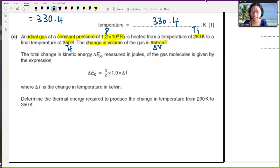So the total change in kinetic energy, delta EK, measured in joules of the gas molecule is given by this expression. Oh, very nice. They give you this. 3 over 2 times 1.9 times delta T. I don't know what this 1.9 is. Okay, you can go and find out what that 1.9 is, but they give us to use. Where delta T is the change in temperature in Kelvin, determine the thermal energy required. So this is what we want to find. Thermal energy required to produce the change in temperature from 290 Kelvin to 350 Kelvin.